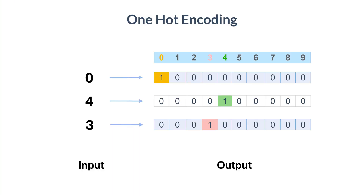One-hot encoding is super common in machine learning and especially in neural networks. You basically transform your data, which is a number, into a list of ones and zeros. We take the list on the left and turn it into the table on the right — so a 3 becomes 0, 0, 0, 1, 0, 0, 0, 0, 0, 0.